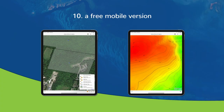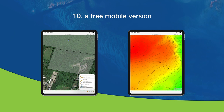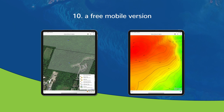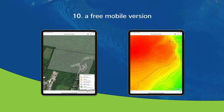Number ten: a free mobile version. GlobalMapper Mobile is a free app for iOS and Android devices that offers field viewing and data collection. It displays any supported data from the desktop software, streamlines data collection, and efficiently transfers data onto the desktop software. A professional-grade application is also available for purchase from the Apple App and Google Play stores.